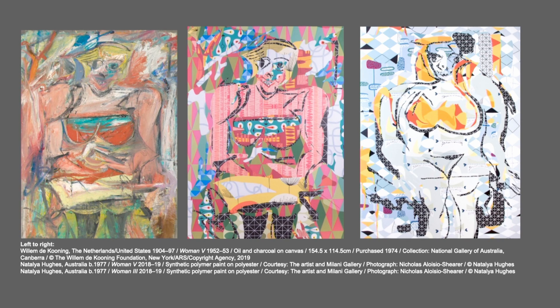In light of our conversation last week, de Kooning said: 'Beauty becomes petulant to me. I like the grotesque. It's more joyous.' His work is often noted for having a gaudy and exaggerated element, which ties in with what we were thinking through with the grotesque. The figure is kind of merging with its indeterminate space.